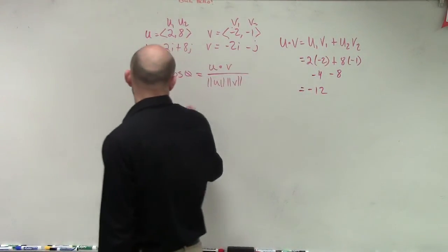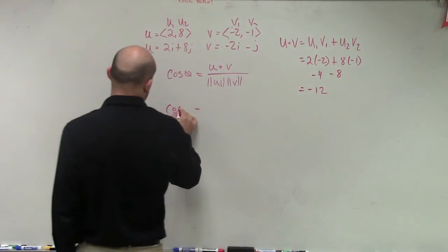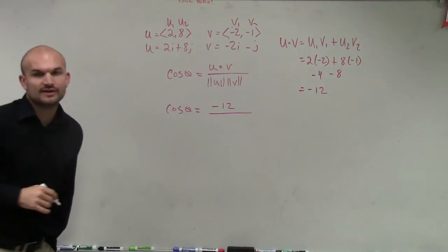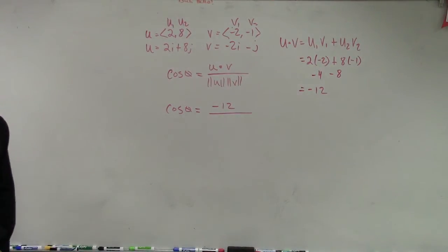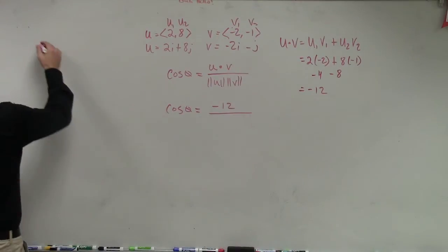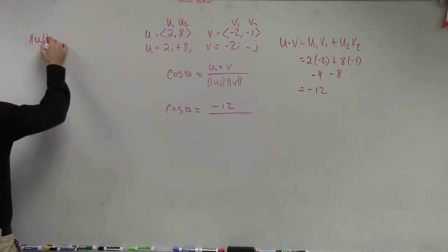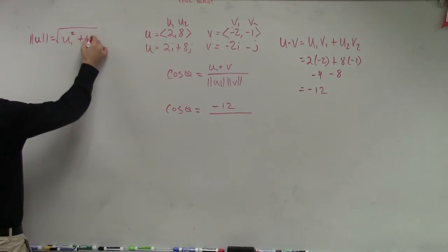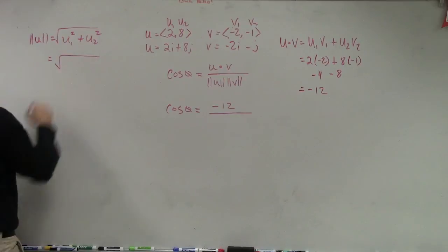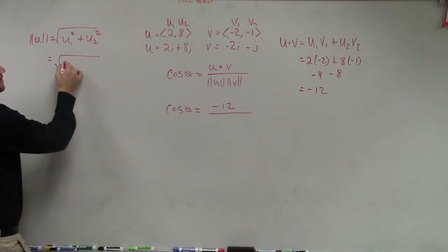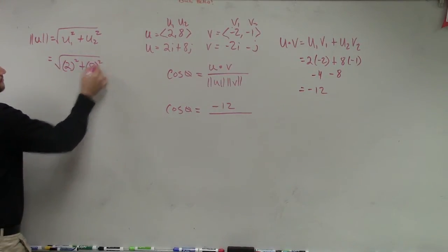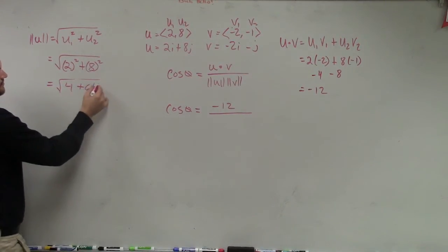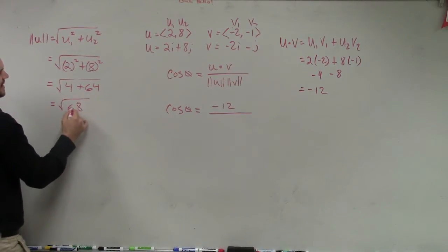So cosine of theta equals negative 12 over the magnitude of u times the magnitude of v. The magnitude of u equals the square root of u1 squared plus u2 squared, which is the square root of 2 squared plus 8 squared, giving the square root of 4 plus 64.